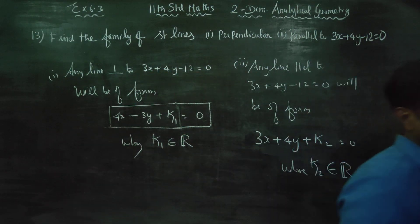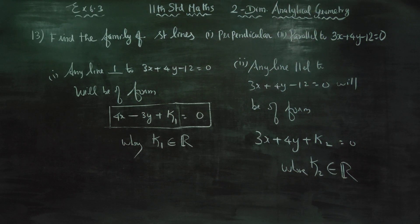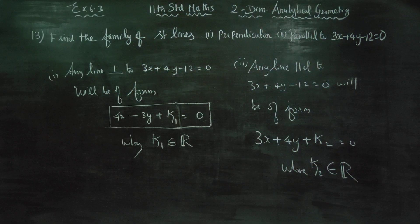Family of straight lines: the difference between the lines is in the constant term. The k1 answers and k2 answers differ — that is the distinction between the two subdivisions. Thank you.